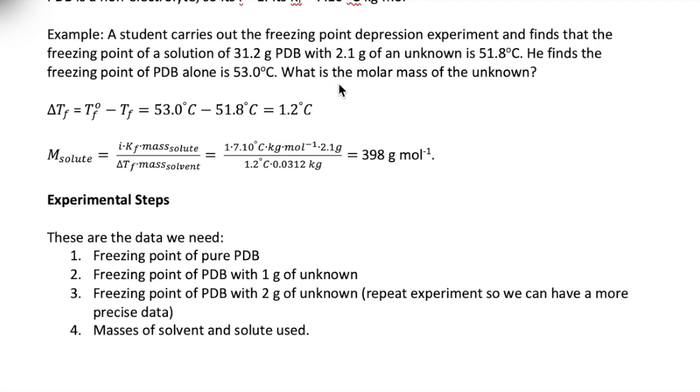Say a student did an experiment with 31.2 grams of PDB and 2.1 grams of the solute, and finds the freezing point is 51.8 degrees Celsius. In another experiment, he finds the pure solvent, PDB, has a freezing point of 53 degrees Celsius. We can determine the molar mass of the solute by first calculating the change in the freezing point, which is 1.2 degrees Celsius.